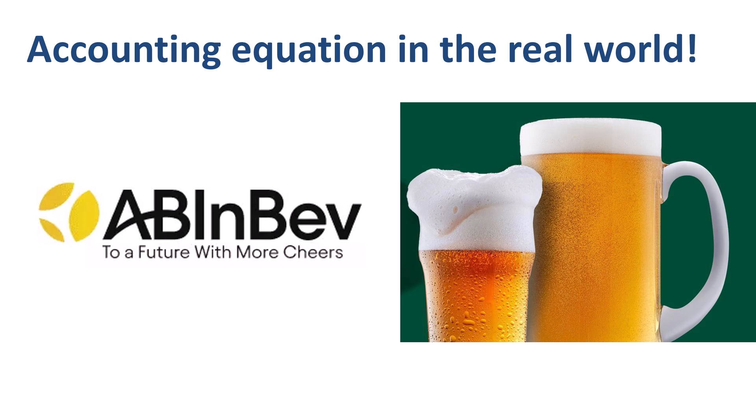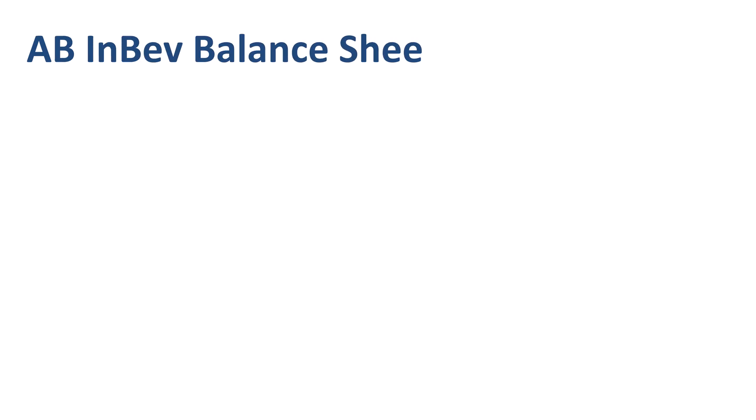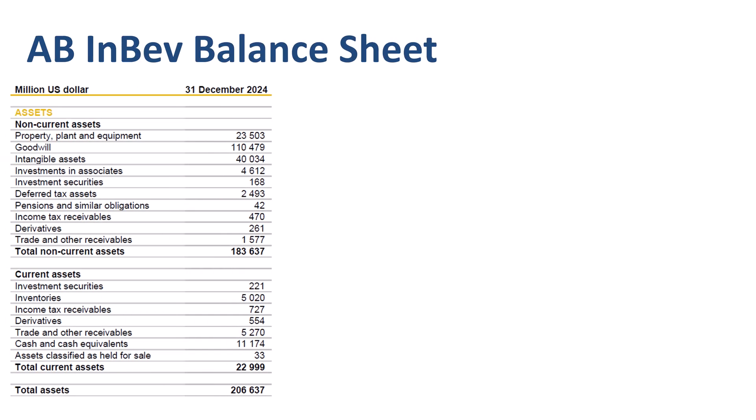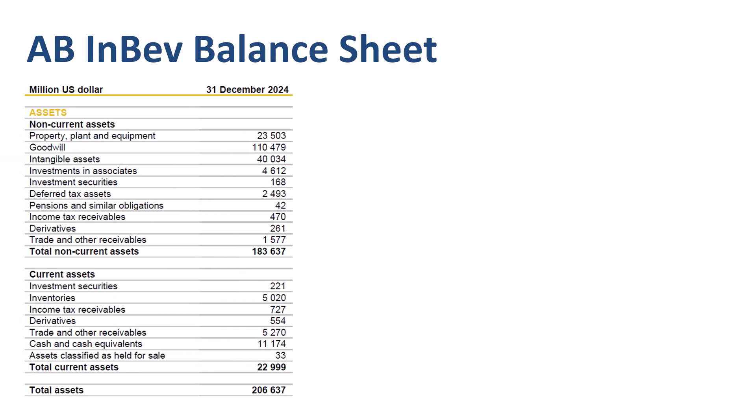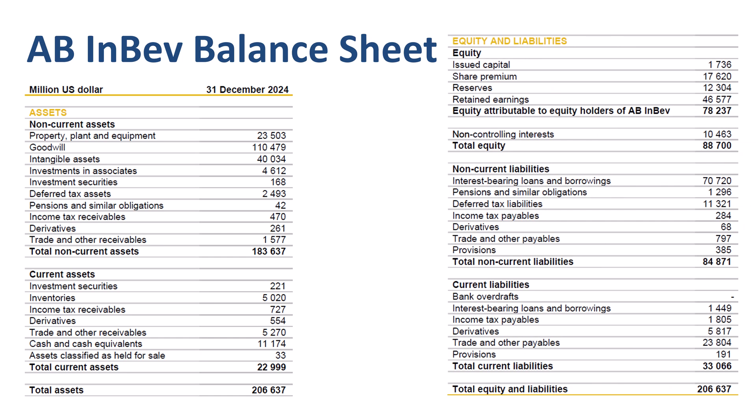To fill in the accounting equation, we need to collect data from the balance sheet. Assets — what the company owns — are on the left. Liabilities and equity — what the company owes — are on the right.